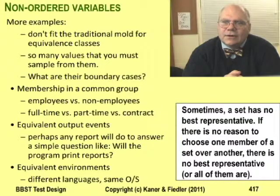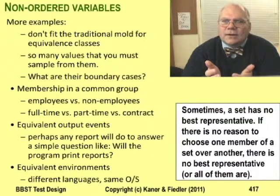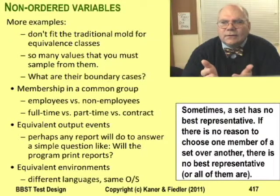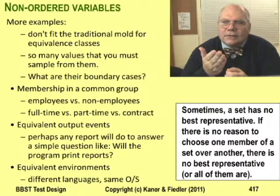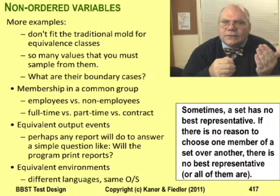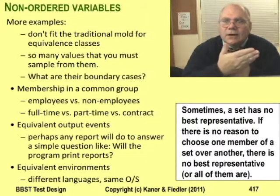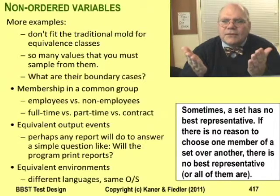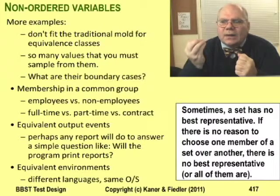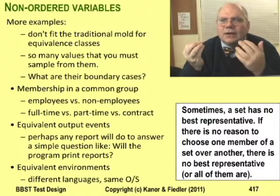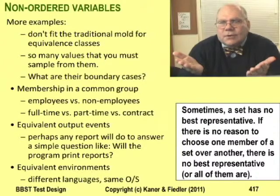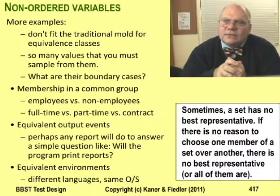Many other types of variables are hard to order or can't be ordered. For example, think of testing a program that calculates payroll, including payroll taxes, and then writes paychecks. A company probably treats full-time employees differently from part-time and differently from contractors — three distinct equivalence classes: employees, part-timers, and contractors. But what makes one full-time employee a better test case than another? Sometimes there is no best representative; you just have to randomly sample from the set.